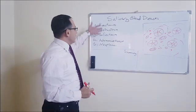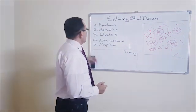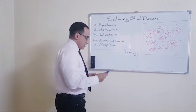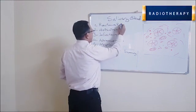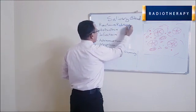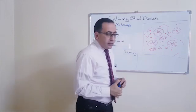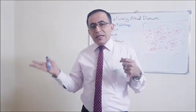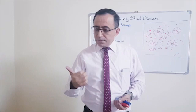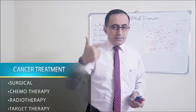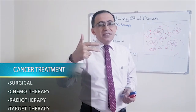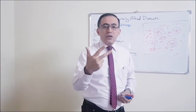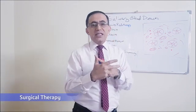Let's see what happens when there is a disease. We start with the reaction, and we have one example for it, which is radiotherapy. Let's recall in our minds what happens when a patient has cancer. I should treat them either with surgery, chemotherapy, radiotherapy, or target gene therapy. Let's focus on the first three, which are often used in combination.